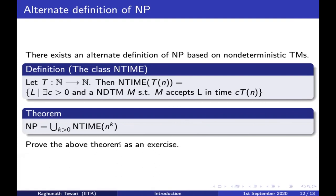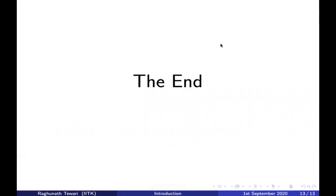Why are these two definitions equivalent? I'll leave this as an exercise: show that any language in NP by the certificate-verifier definition also belongs to the union of NTIME(n^k) for k > 0, and vice versa. Please try to prove this yourself — you don't have to submit exercises unless I explicitly say so; they are only for practice. I will end here today — thank you.